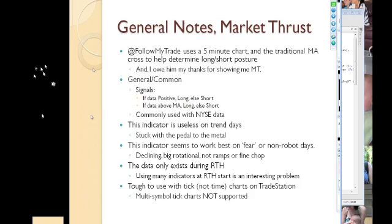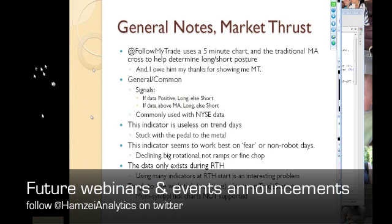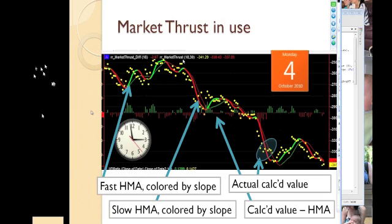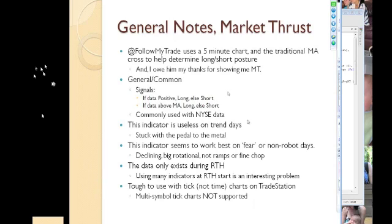There's your moving average crossover, and what he does is use that to help establish his bias and posture. I owe him thanks for showing me this. We trade charts sometimes during the day. The common use is as a signal: if the data is positive, you're long; if the data is negative, you're short. What you see here is a reasonably positive indicator; here they're negative, so this is just bad. Greater than zero means long, otherwise short in theory.